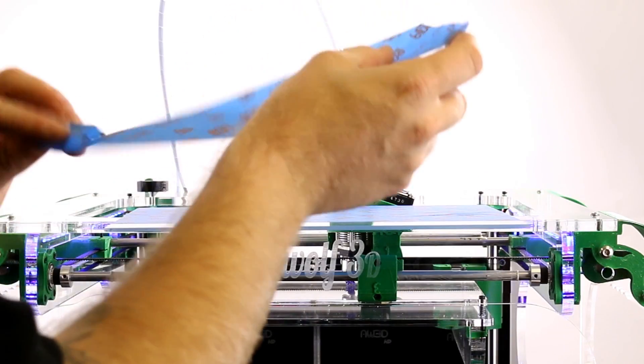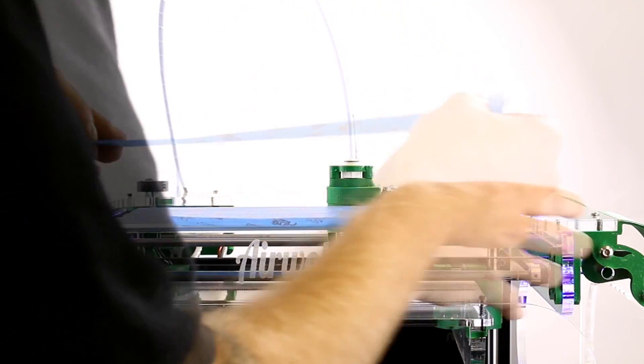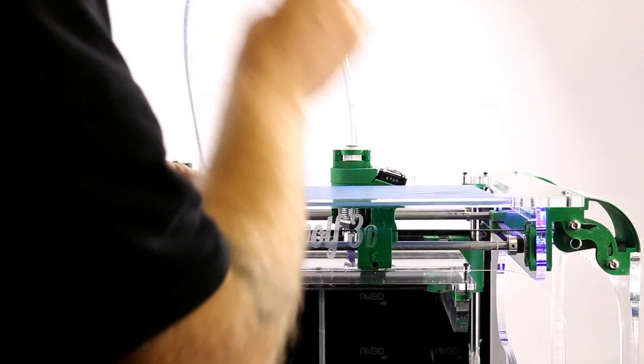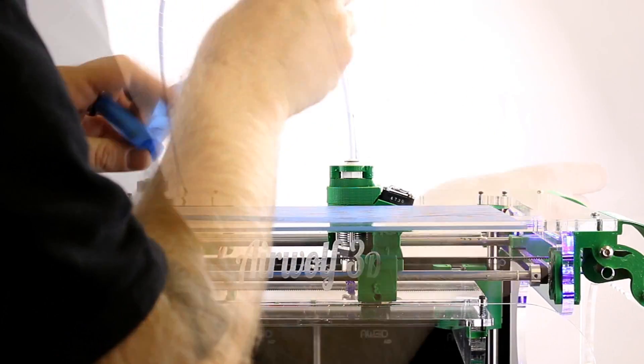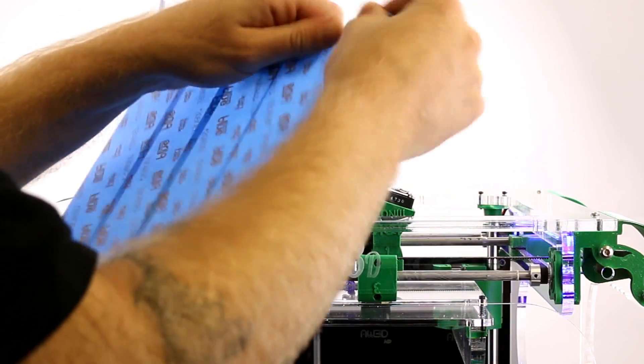Are you tired of applying painter's tape on the build surface of your 3D printer? Sticky residue, wrinkles, bubbles, and tears are all common problems when applying tape to the build surface.